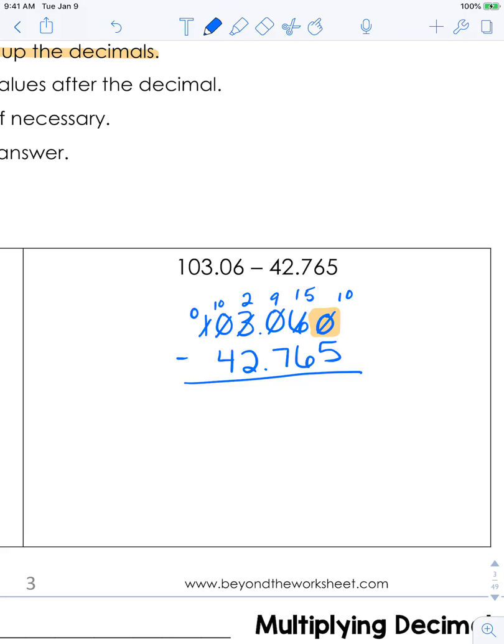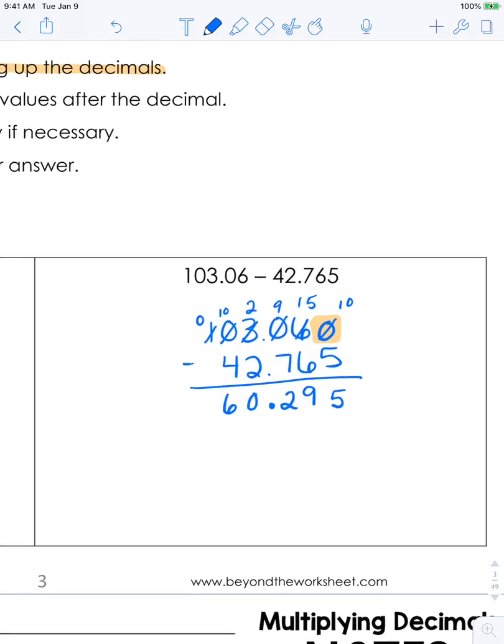Okay now let's go back and subtract. 10 minus 5, 15 minus 6, 9 minus 7. I'm going to bring down my decimal. 2 minus 2 and then 10 minus 4. So my answer is 60.295.